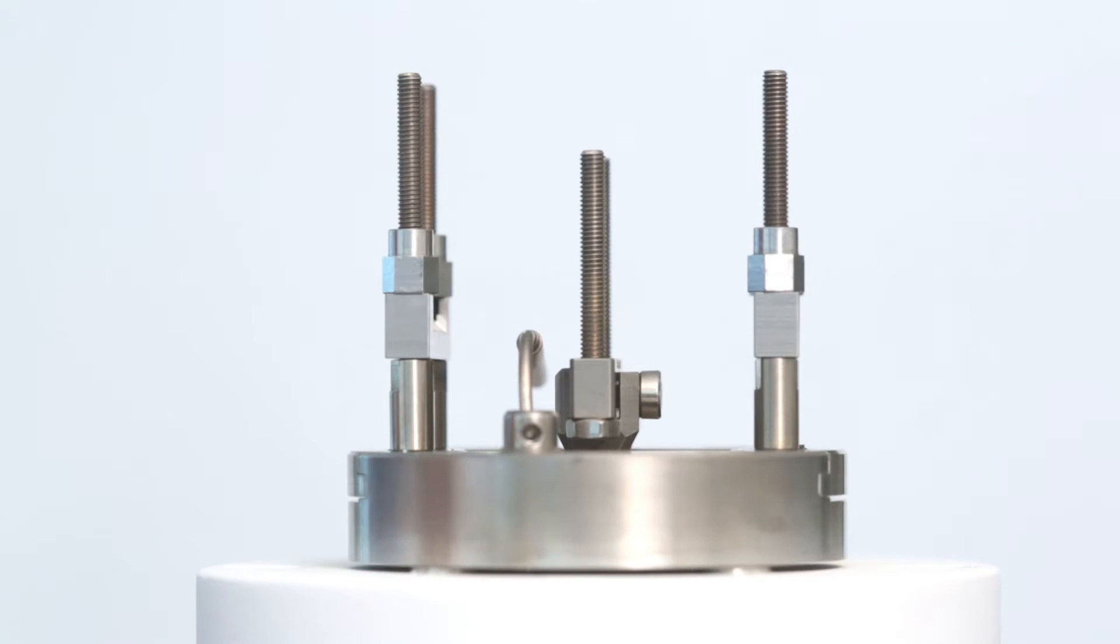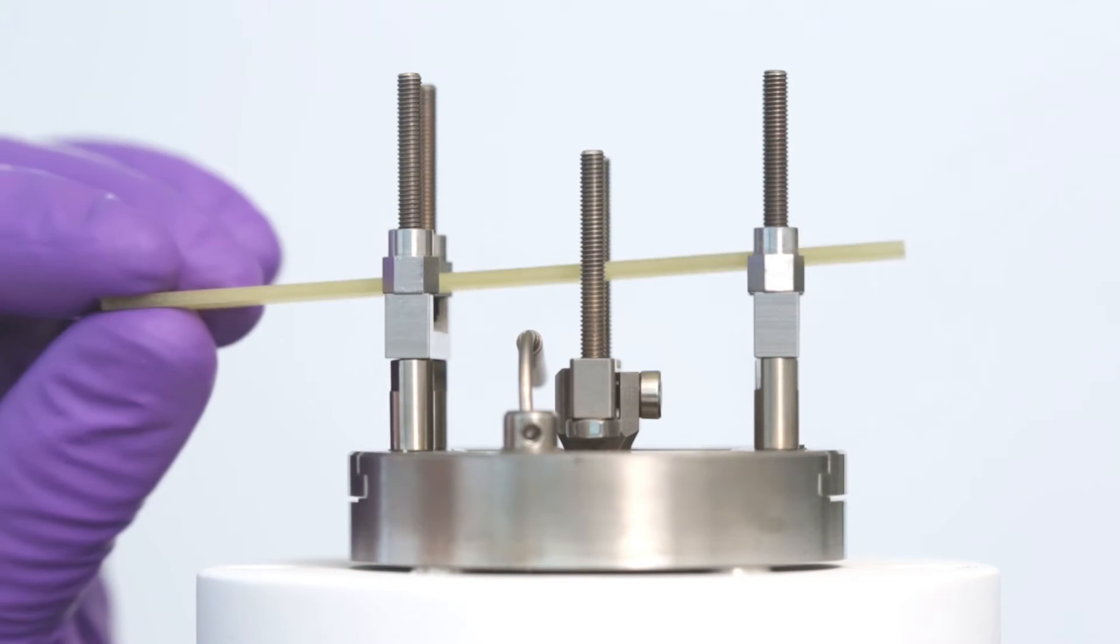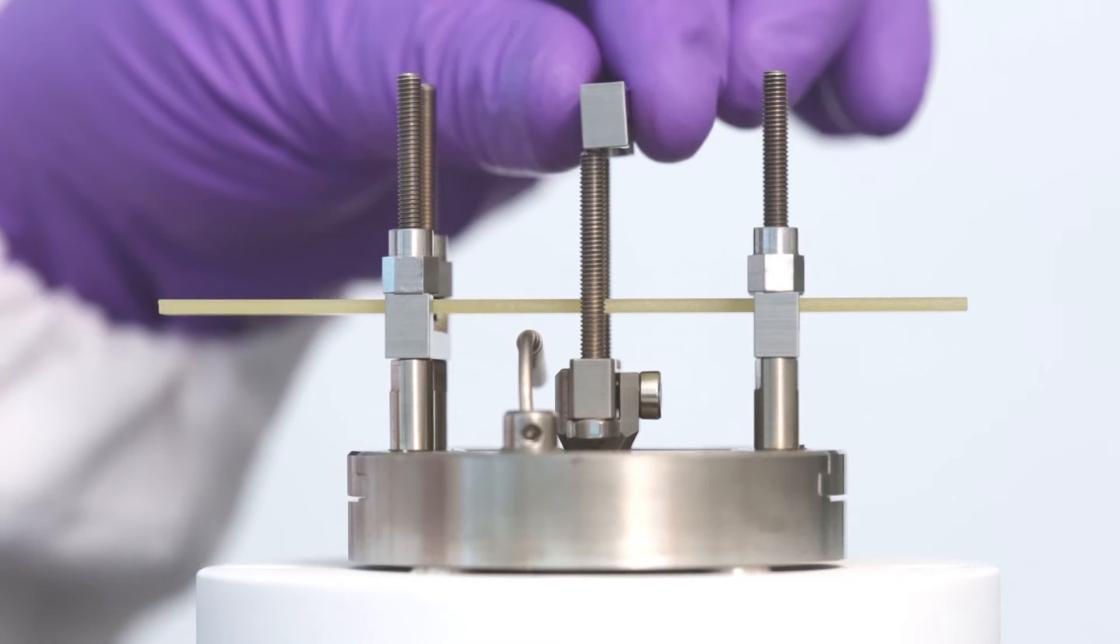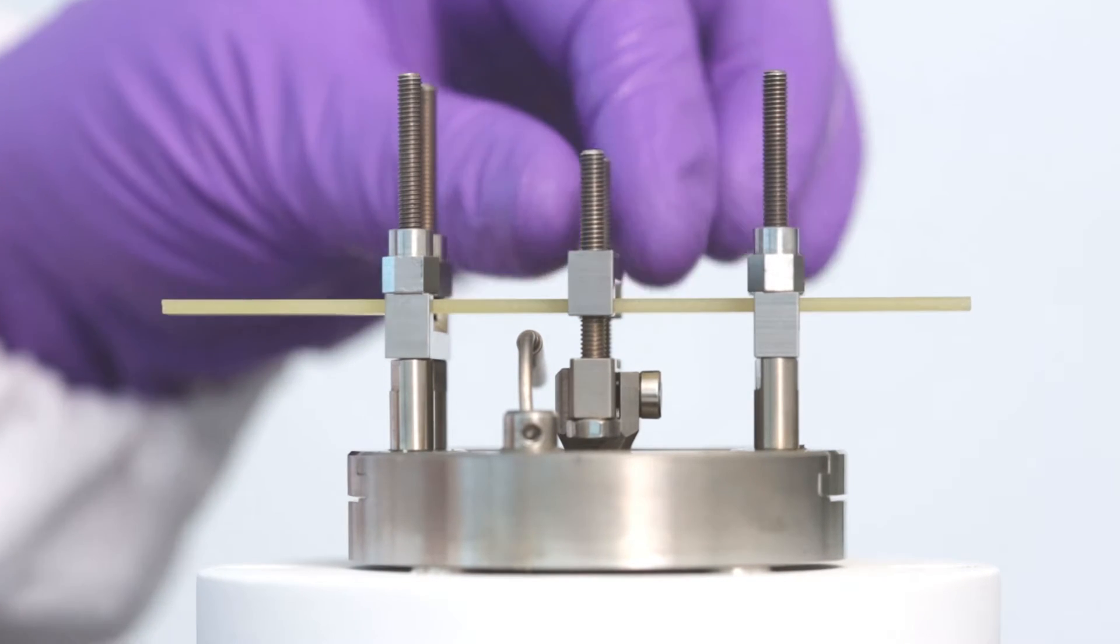Now, carefully place the sample in the 3-point bending clamp. Once this is done, we can fit the middle clamp bar with the V-shaped edge facing downward.